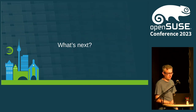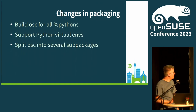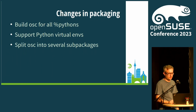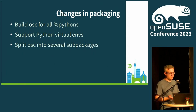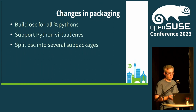Now this is where the presentation becomes interesting for those who know OSC internals or have tried to use OSC as a Python library. Starting with minor changes: I would like to build OSC for all available Pythons in the distribution — currently it's just Python 3 without any specific version. Since OSC is a library, it should work for all available Pythons. That also includes supporting virtual environments and maybe even better sub-packaging, because why install all dependencies when you just need the part that contacts the OBS API?